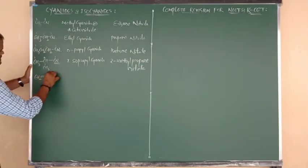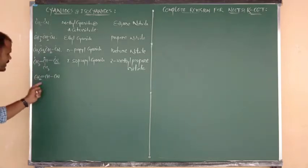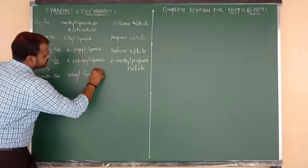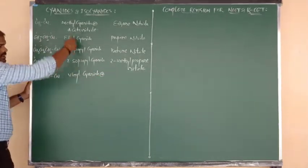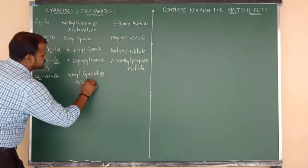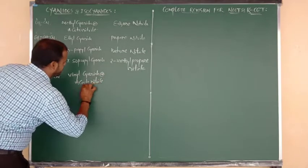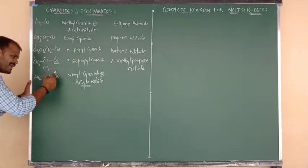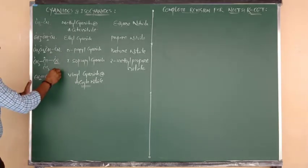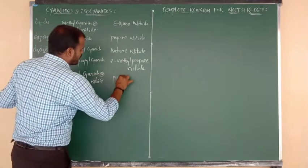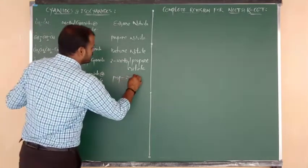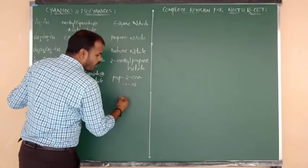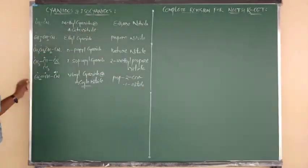Next compound: CH2=CH-CN. The common name is vinyl cyanide, also known as acrylonitrile — this is very important. This compound is also called a 'acrylonitrile' because an alpha-beta unsaturated carbon is connected to CN. For the IUPAC name: first carbon, second carbon (double bond at second position) — the name is prop-2-en-1-nitrile, or propenenitrile.